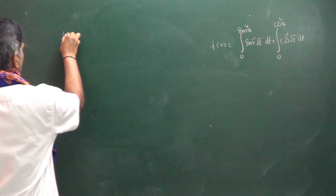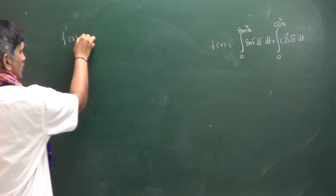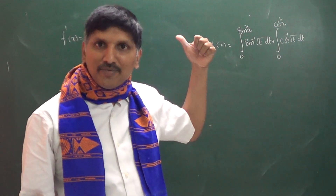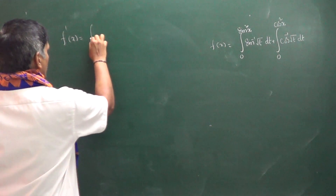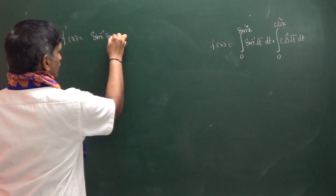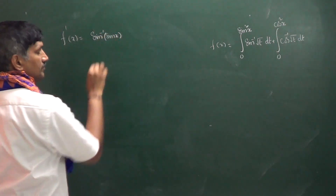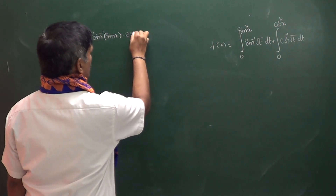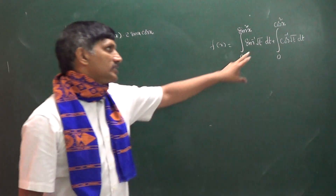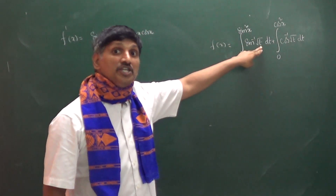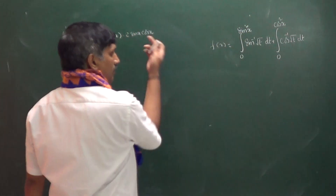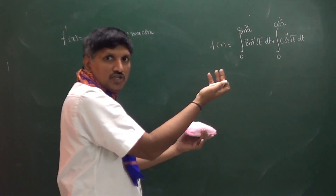To find f(x), I will compute f'(x). We differentiate by applying the Leibniz rule. For the first integral: in place of t substitute the upper limit sin²x, giving sin⁻¹(√(sin²x)), multiplied by the differentiation of sin²x which is 2 sin x cos x. The lower limit is 0, so sin⁻¹(0) = 0, and that term vanishes.